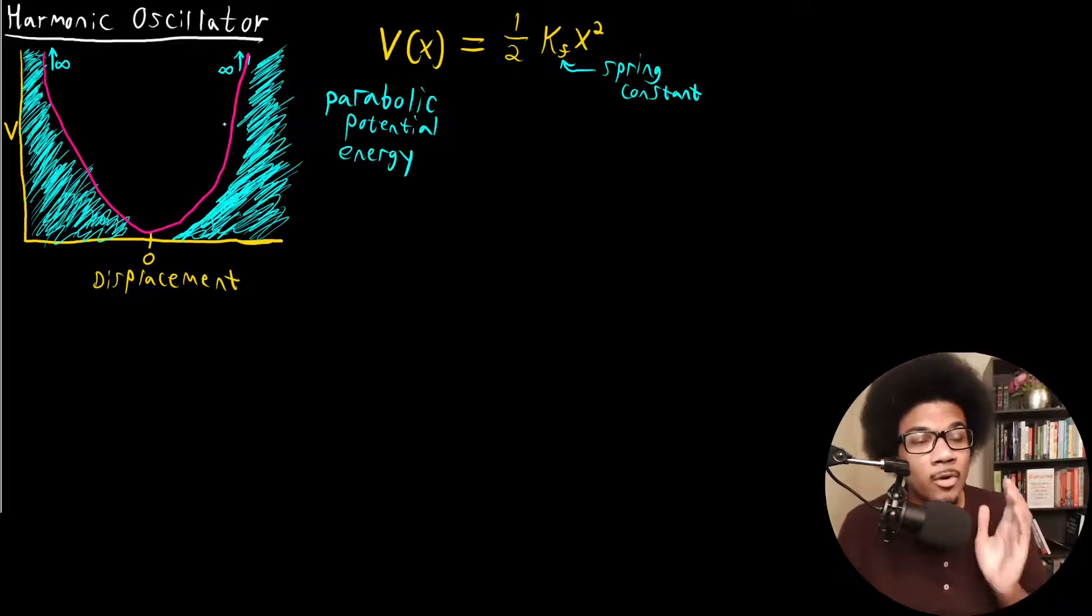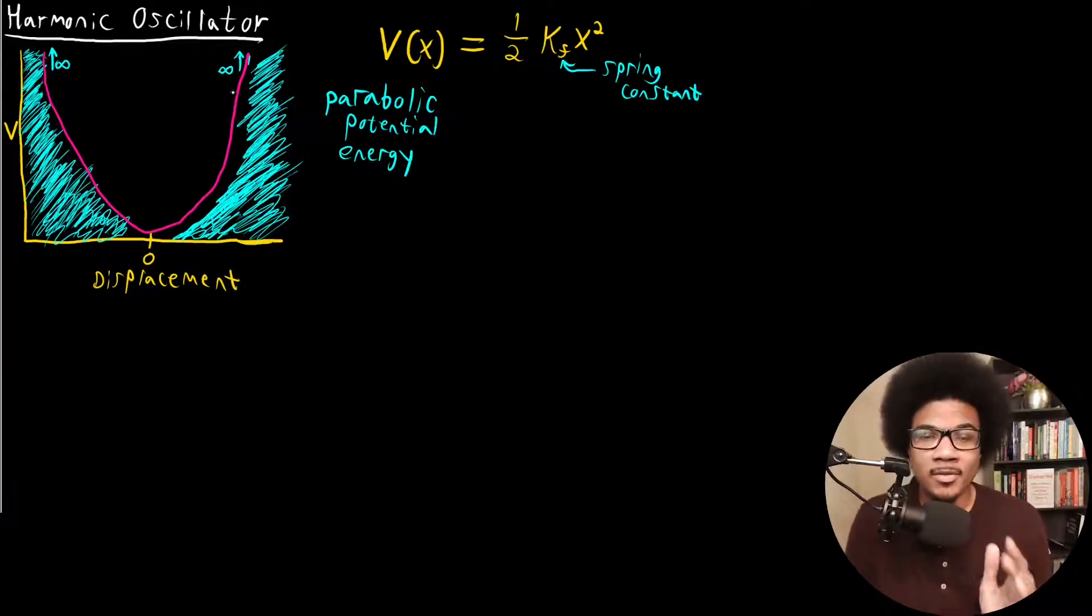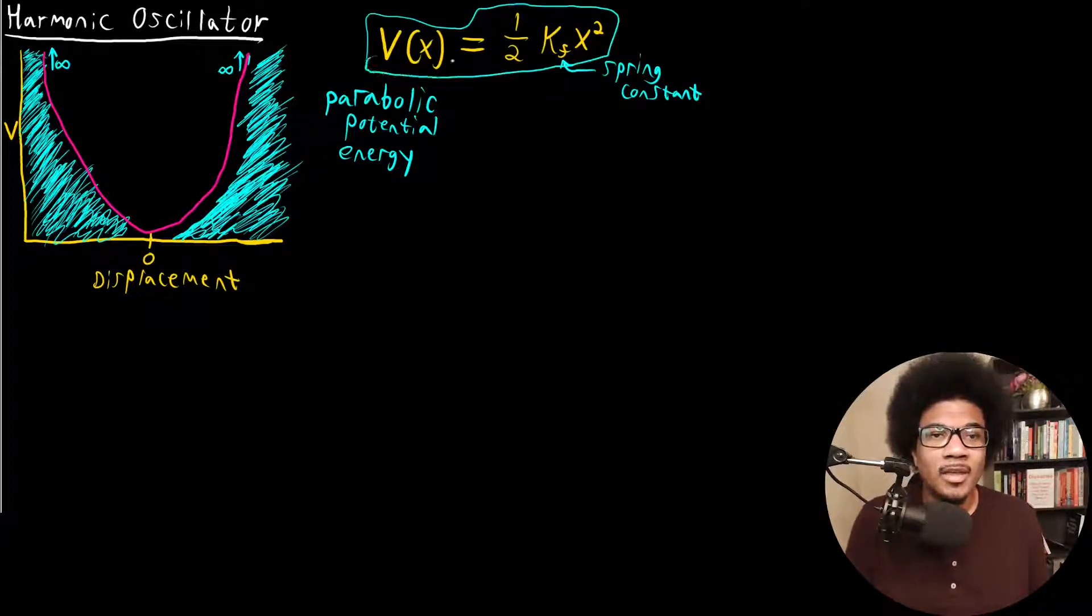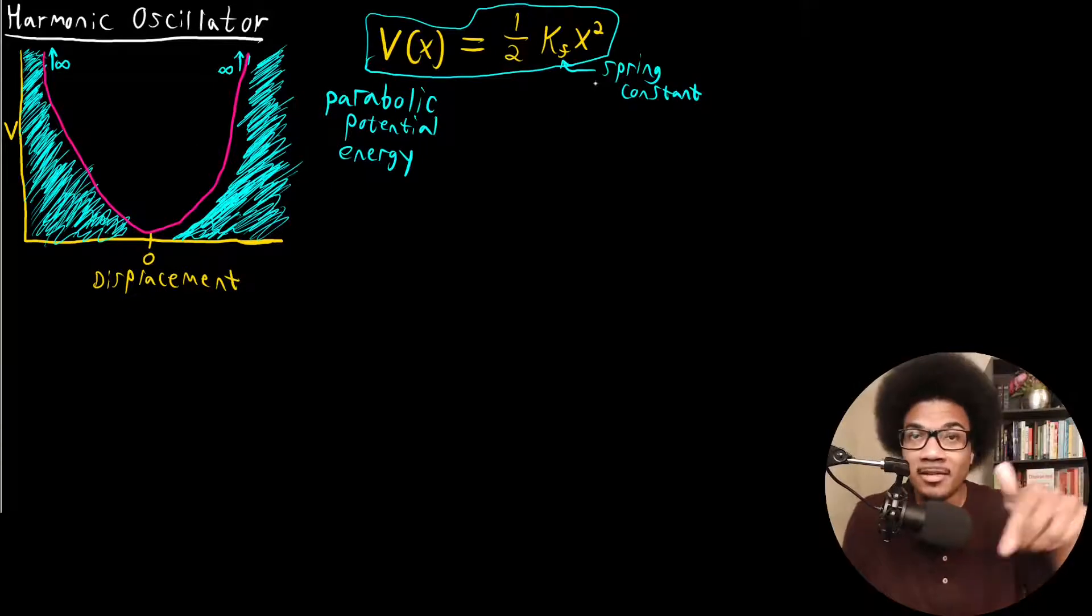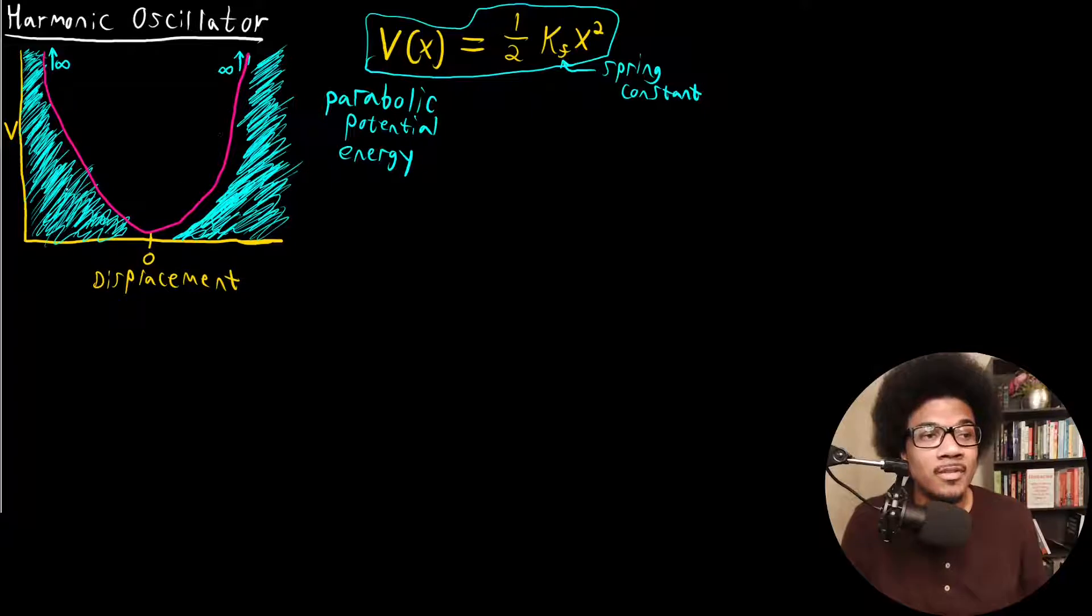And you might be wondering, why does it have this particular shape? Well, if we go back to the potential energy function, then we can see why it has its shape: x². This potential that's a function of x depends on this x², has this quadratic dependence on x. And we know if you plot x², you just get a parabola. So we get this parabolic potential energy surface because of the x² here in the potential.